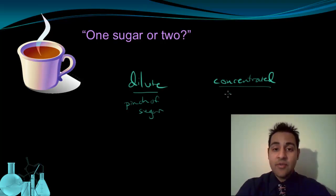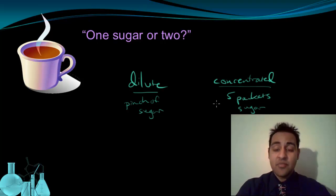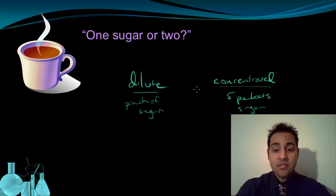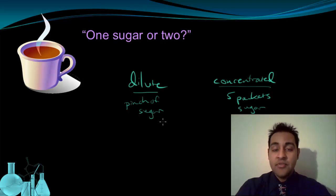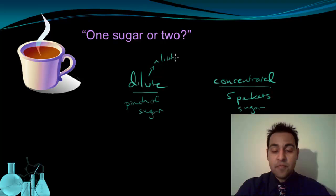However, if you were to add five packets of sugar, that would be considered pretty concentrated. Now, these terms dilute and concentrated are okay for describing things, but they're limited because they are relative terms. They do not refer to any set or defined amount. Dilute simply refers to a little bit of solute, and concentrated refers to a lot of solute.